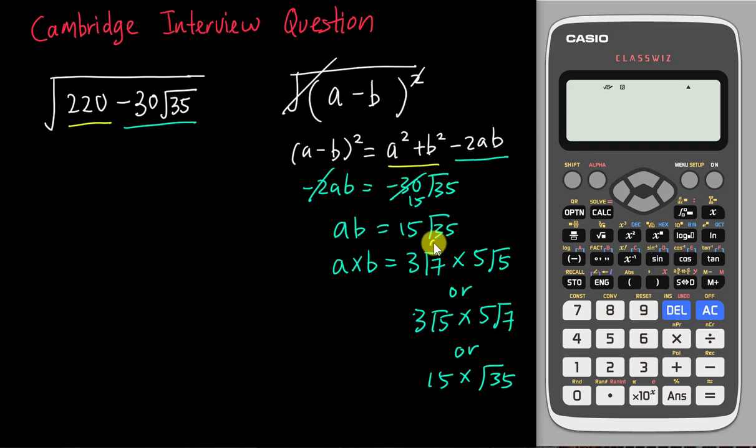Let's say if I square 3√7, I get 9 times 7, which is 63. If I square 5√5, I get 25 times 5, which is 125. Add together is 188, which is not 220, so I know this combination cannot work.